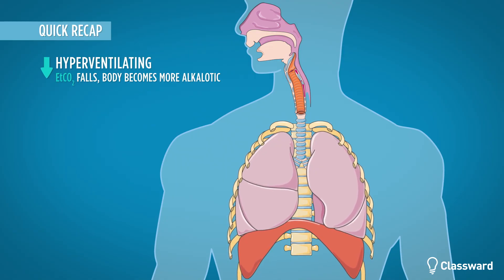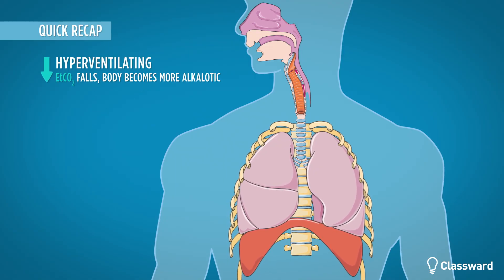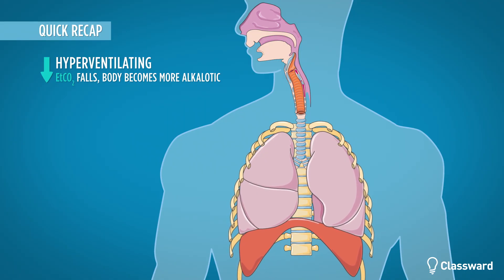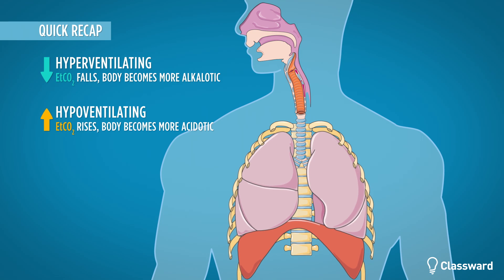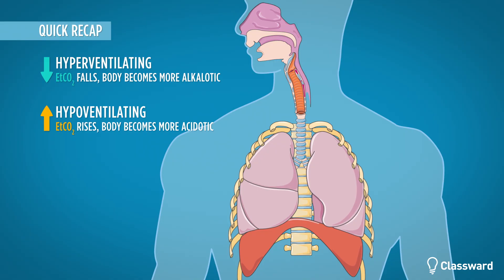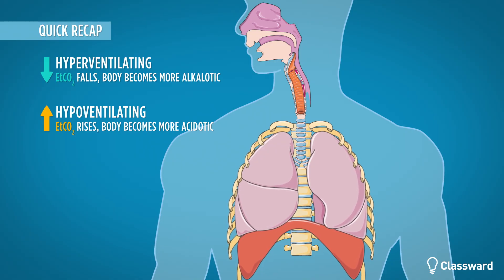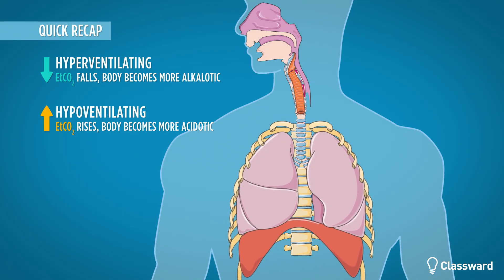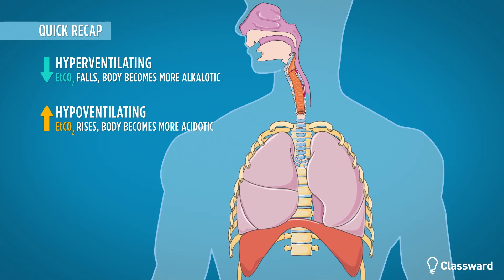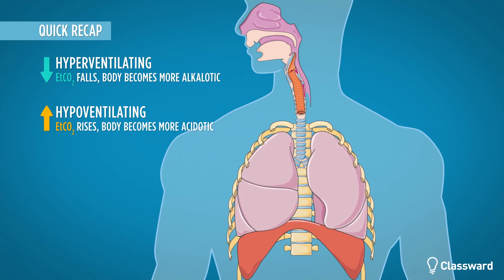To recap: when we hyperventilate, we blow off more CO2 and the body becomes increasingly alkalotic. When we hypoventilate, we retain CO2 and the body becomes increasingly acidotic. This regulation of ventilatory rate can be a normal response to compensate for an increased or decreased level of carbon dioxide in the body, bringing the body's pH back into a normal range.